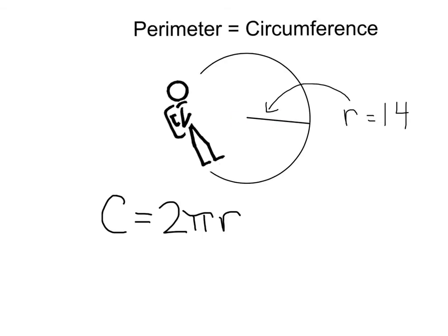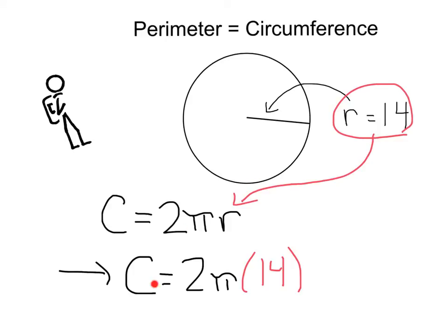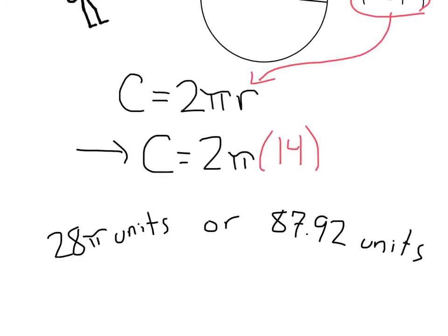Here, we see that we have a radius of 14. So all I need to do is take that radius of 14 and plug that right into my circumference formula. That's going to give circumference equals two pi times 14, or 28 pi units, or if we times 28 times 3.14 for pi, we get 87.92 units.